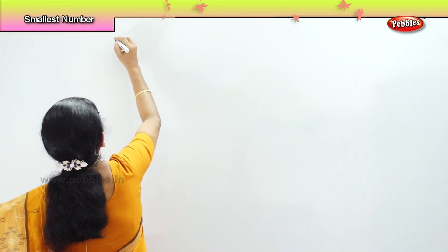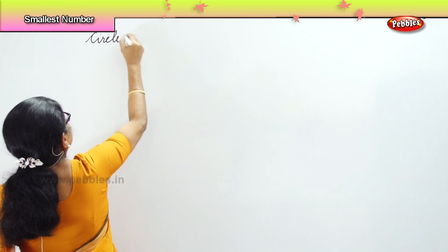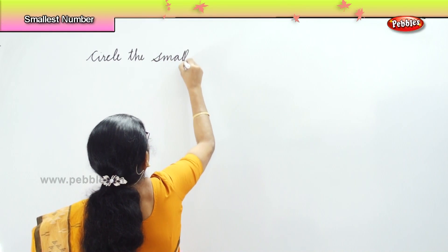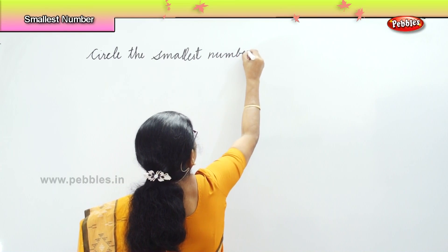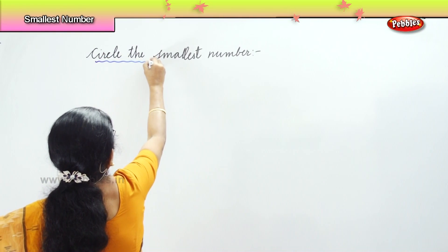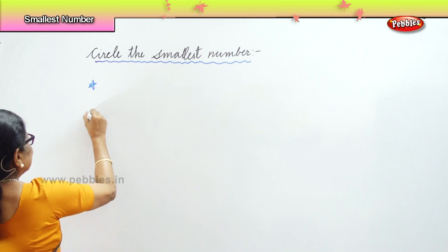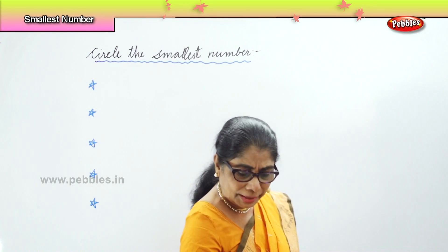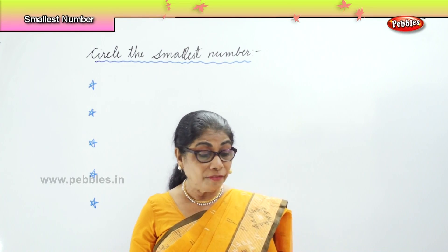So we are going to do an exercise. Circle the smallest number in a row. You are given about four or five numbers and you will circle the smallest number. We will do a few exercises, maybe five exercises. I will give you five sets of numbers and you can look at the number and identify — think carefully, look carefully.